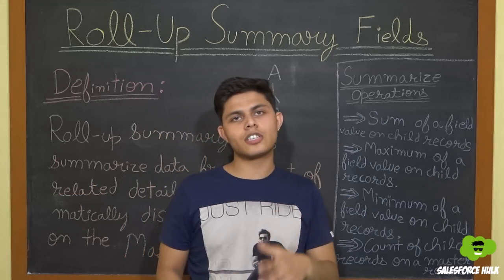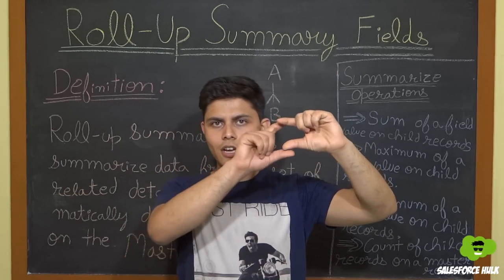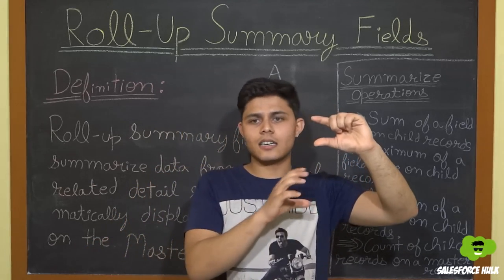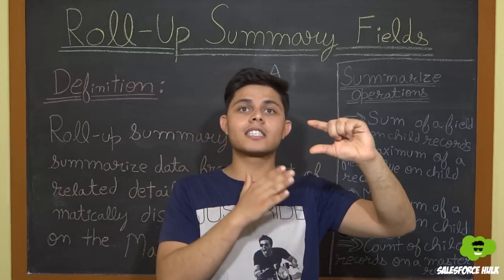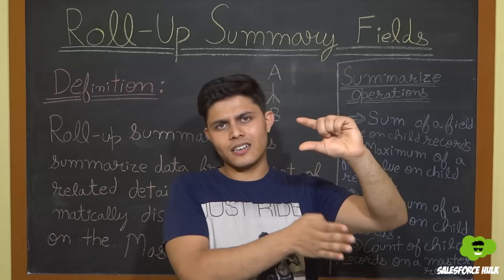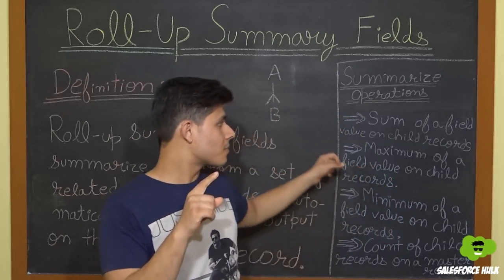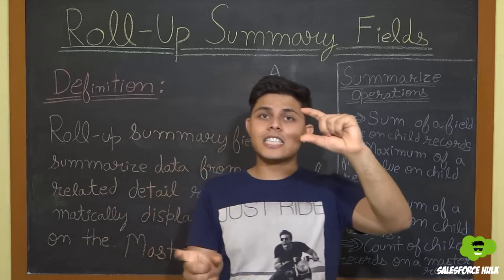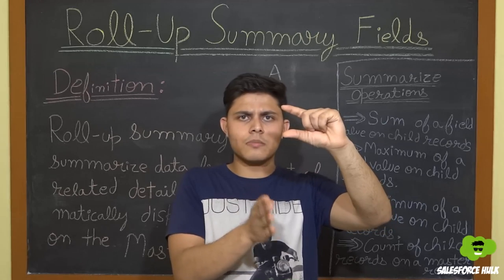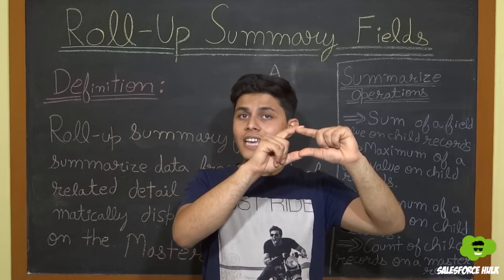The second operation is maximum — maximum of a field value on the child records. Taking the same example with A record and B records 1, 2, and 3: you want to display the maximum value of the amount field present on those child records. You'll create a Rollup Summary Field and select the operation as maximum. Whichever record among B record 1, B record 2, or B record 3 has the highest amount, that value will be displayed on the master record, which is A.